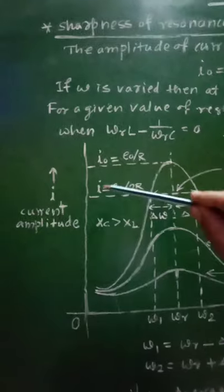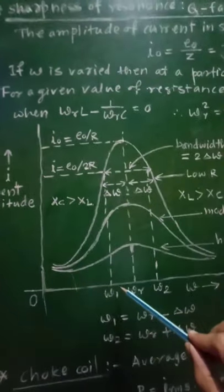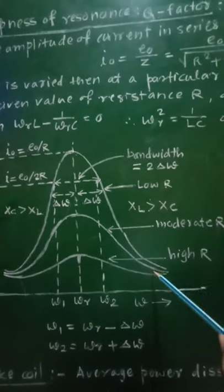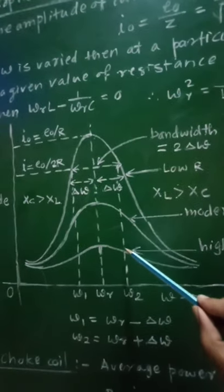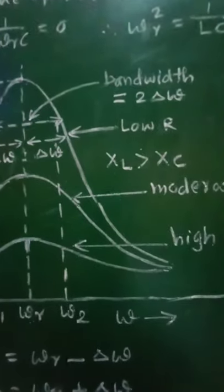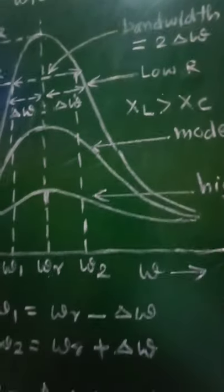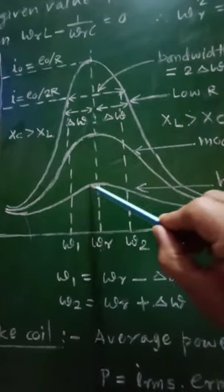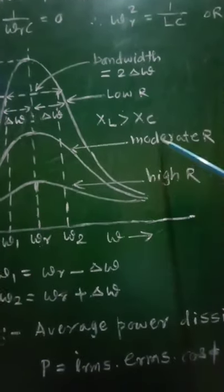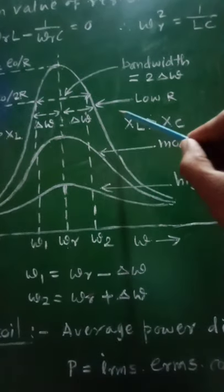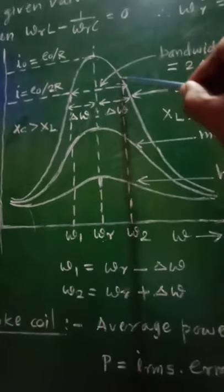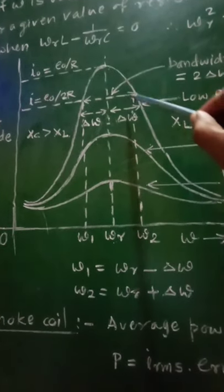If we plot the current amplitude versus angular frequency omega, the nature of the graph is shown for different values of resistance R. The first resonance curve represents a high value of R, where the peak is slightly flat. The second curve is for a moderate value of R, and the third curve represents a low value of R, where the sharpness of the resonance curve is maximum.